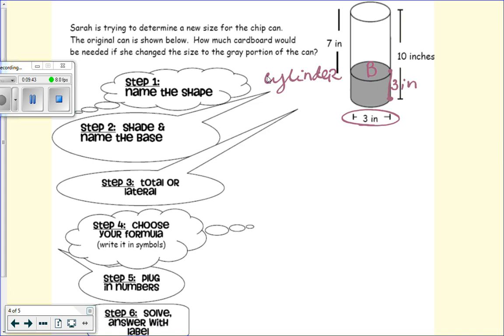Do we have diameter in our formula? What do we have in our formula? Radius. Radius. So our radius is 1.5. You got it.